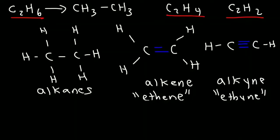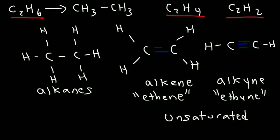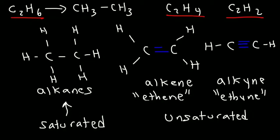Alkenes and alkynes are known as unsaturated compounds because they don't contain the maximum number of hydrogen atoms per carbon atom. Alkenes are known as saturated compounds. So make sure you keep this in mind.